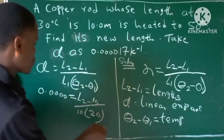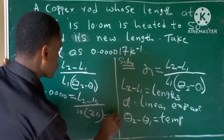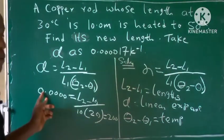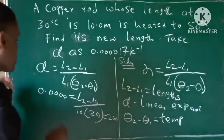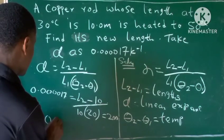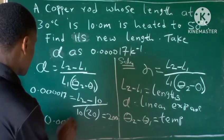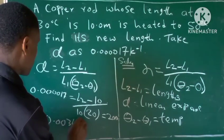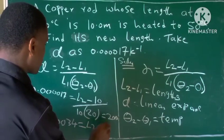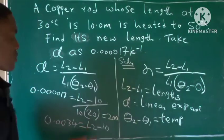So 10 times 20 is 200. So you use 200 to multiply the linear expansivity. So 200 times this will give us 0.0034 equals L2 minus 10.